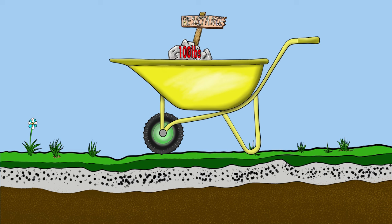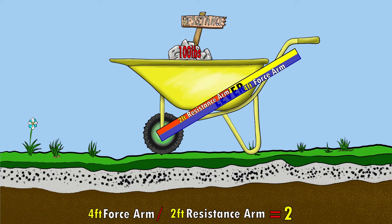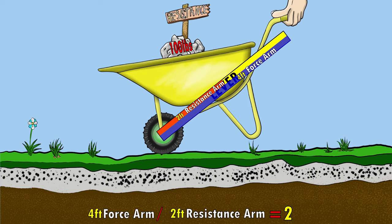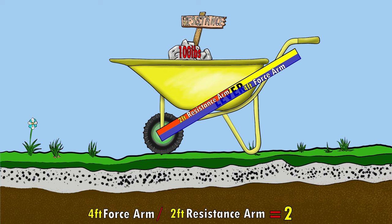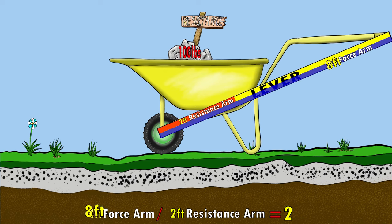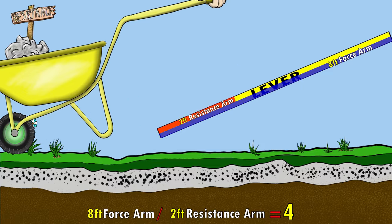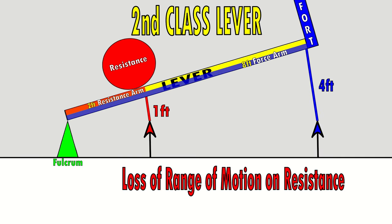The mechanical advantage is always greater than one because the force arm is always longer than the resistance arm, allowing you to increase force produced but lacking range of motion. For example, if a rock weighs 100 pounds and the force arm is twice as long as the resistance arm, it feels like 50 pounds. If four times as long, it feels like 25 pounds — but the longer the force arm, the less range of motion you get.